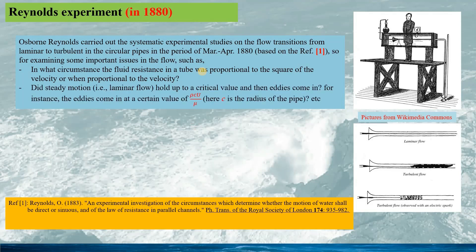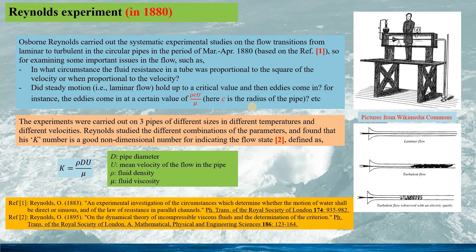The steady flow, that is the laminar flow, holds up to a critical value, and then eddies came in. The eddies came in at a certain value of the expression: rho is the density of the fluid, z is the radius of the pipe, U is the average velocity of the flow in the pipe, and mu is the viscosity coefficient of the fluid. The experiments were carried out on three pipes at different temperatures and different velocities. Reynolds studied different combinations of parameters and found that his dimensionless number is a good non-dimensional number for indicating the flow state.